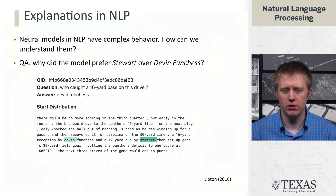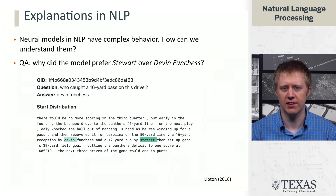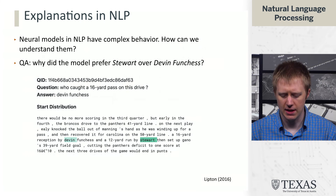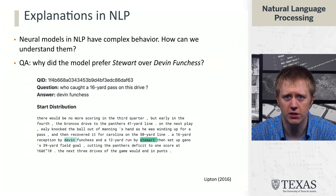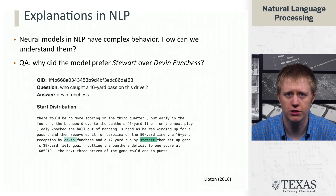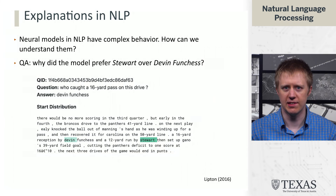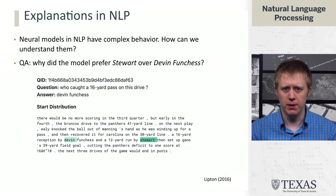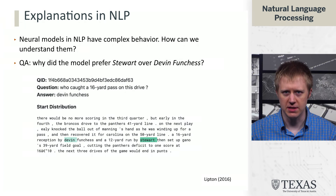For example, when we looked at question answering, we saw this example where the model is trying to say who caught a 16-yard pass in this drive, and the model picks the wrong thing based on the highlights. The answer should be Devin Funchess, and instead it picks the last name Stuart. So we want to ask: why did this happen? What can I do to fix it? How do I debug my system? And what does this say about how this system performs?